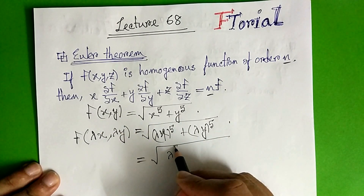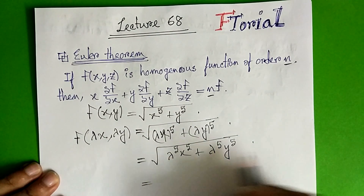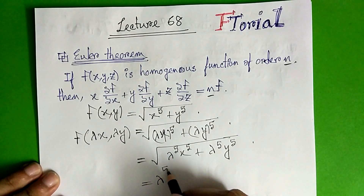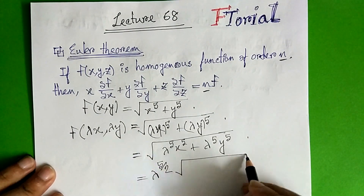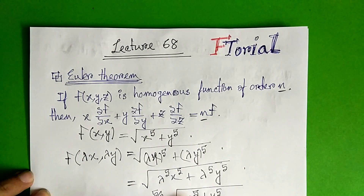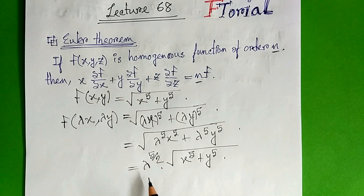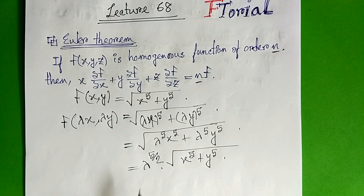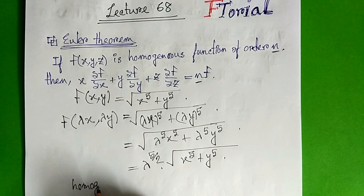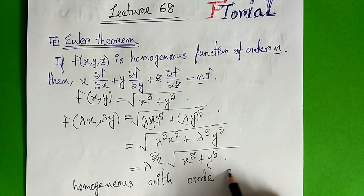So lambda to the power 5, plus lambda y to the power 5, plus lambda y to the power 5. We see the lambda taken within the power. Homogeneous with order 5 by 2.